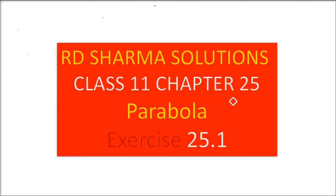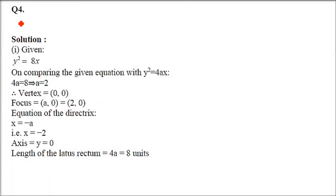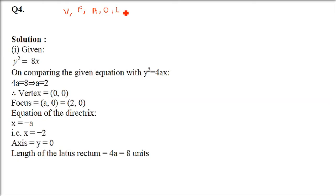We are taking RD Sharma solutions class 11 chapter 25 parabola exercises 25.1. This is question number four — we have to find out the different values when the equation of parabola is given. There are nine parts, almost similar. We are going to take one in detail. The question asks: find the vertex, focus, axis, directrix, and latus rectum.